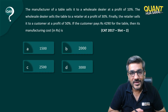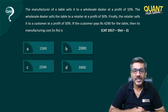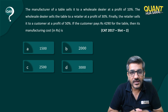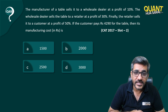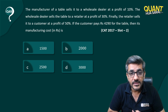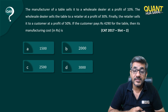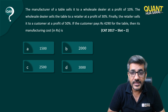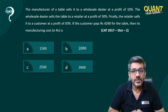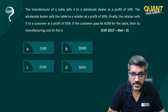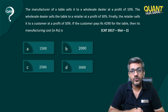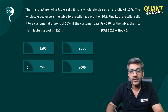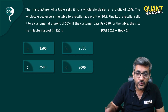Welcome back to question number 49 of the series. The question says: the manufacturer of a table sells it to a wholesale dealer at a profit of 10 percent. The wholesale dealer sells the table to a retailer at a profit of 30 percent. Finally, the retailer sells it to a customer at a profit of 50 percent. If the customer pays rupees 4290 for the table, then what is its manufacturing cost?